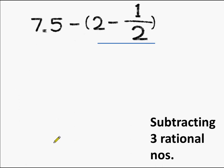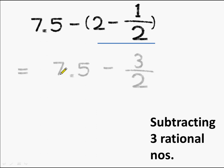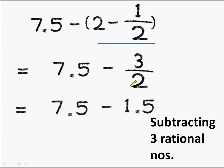Now let's change the order. This time we first take the group of 2 minus 1/2 and do the subtraction, then subtract that result from 7.5. Subtracting 1/2 from 2 gives 1 and a half, which equals 3/2. So we have 7.5 minus 3/2. Since 3/2 equals 1.5 in decimal, subtracting 1.5 from 7.5 gives 6.